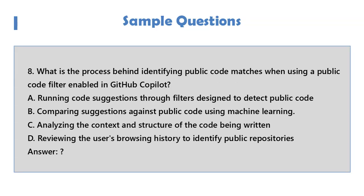Question 8: What is the process behind identifying public code matches when using a public code filter enabled in GitHub Copilot? A. Running code suggestions through filters designed to detect public code. B. Comparing suggestions against public code using machine learning. C. Analyzing the context and structure of the code being written. D. Reviewing the user's browsing history to identify public repositories.